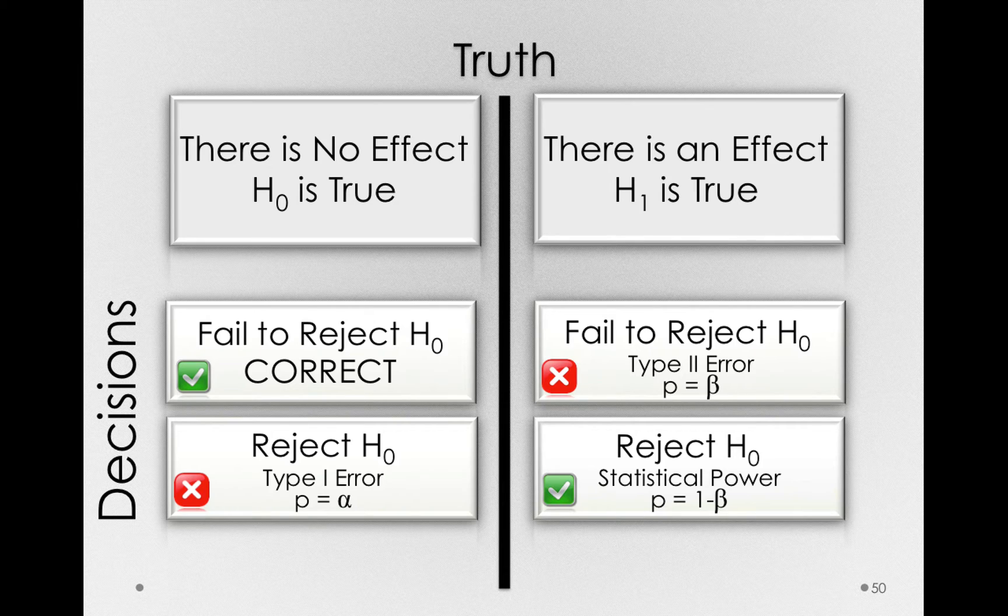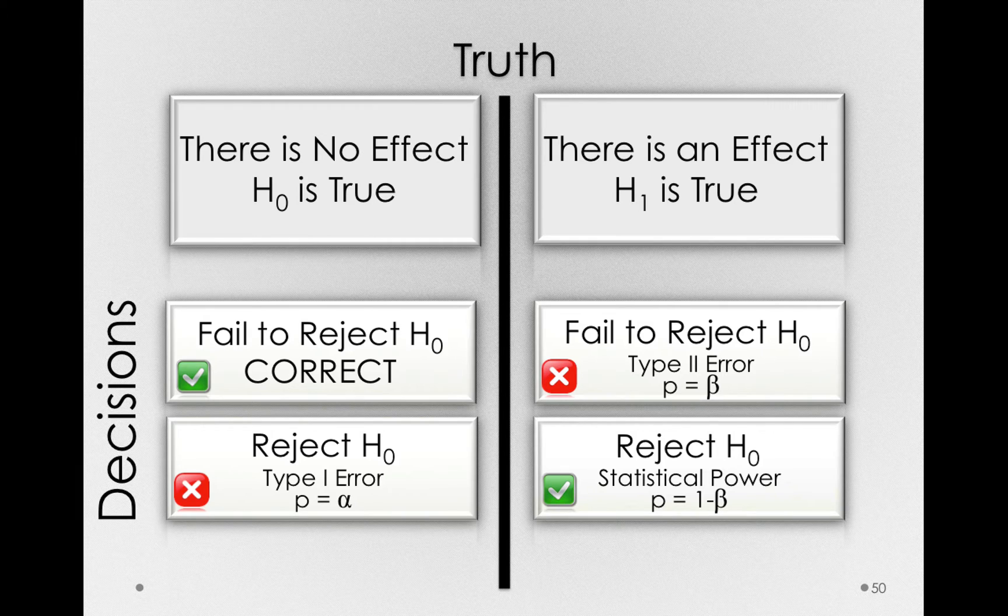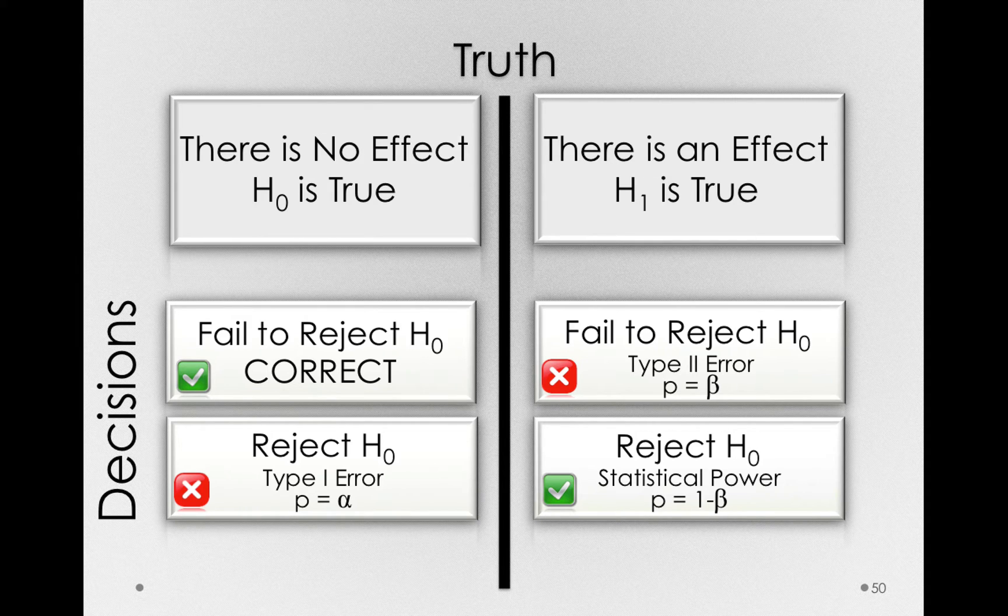On the right-hand side, something needs to happen. So if the probability we will miss occurs with probability beta, the probability we won't miss, that is, will correctly reject a false null hypothesis, is the probability 1 minus beta.